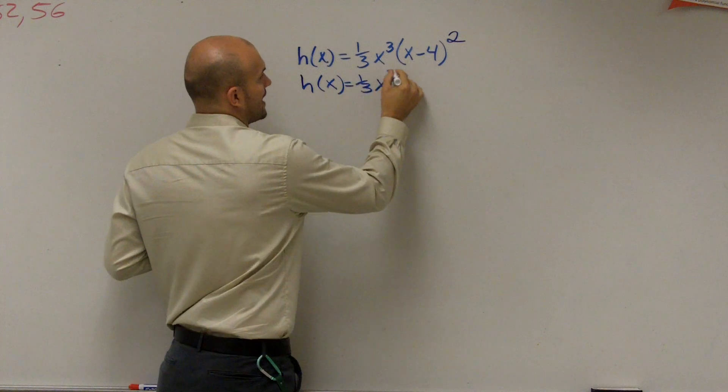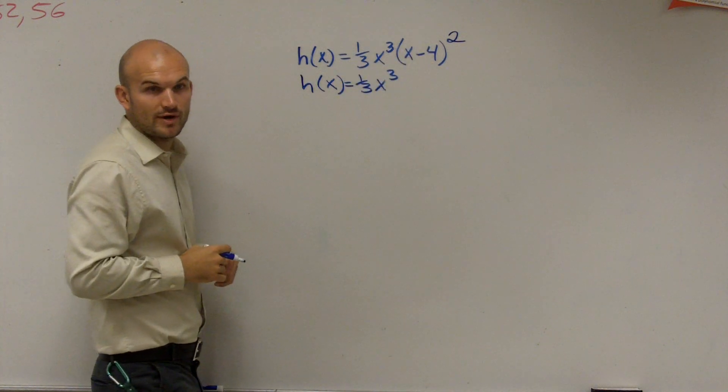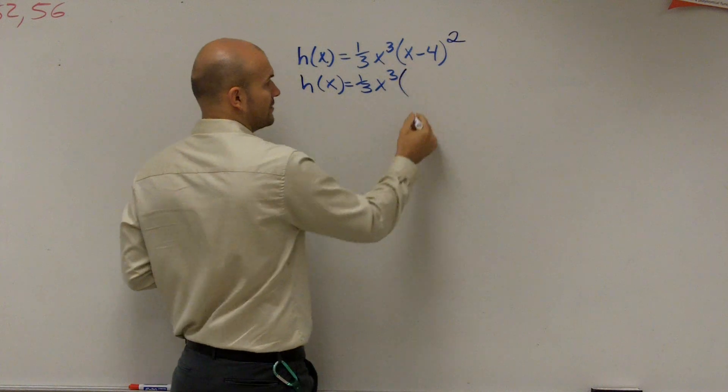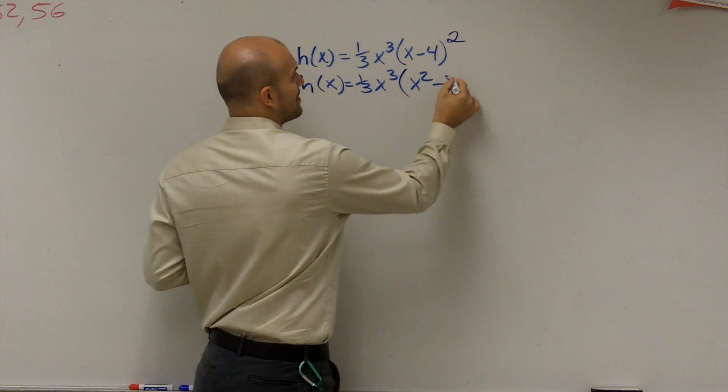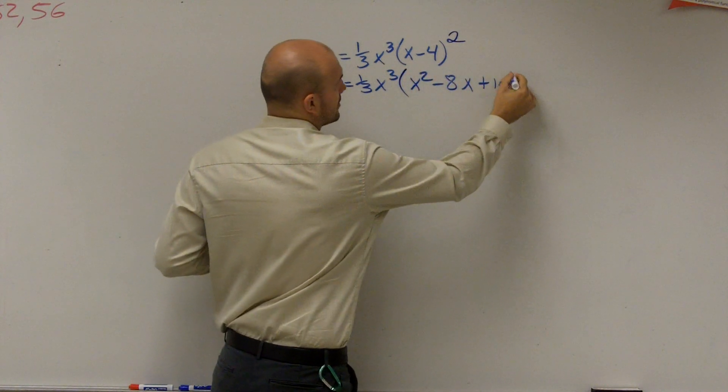So I have one-third x cubed, x minus 4 squared, that's going to produce a perfect square trinomial. x squared minus 8x plus 16.